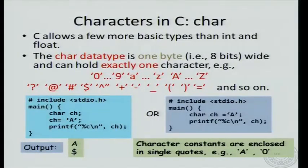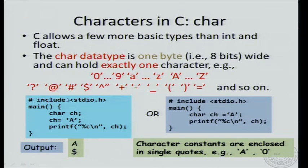In this session we will learn about one more fundamental data type in C. So far we have seen ints and floats — ints represent integers and floats represent real numbers. The third most important data type is character, called char in C. C allows a char to be one byte, that is 8 bits wide, and one byte can hold exactly one character — for example, a digit like 0 through 9, a lowercase letter like a through z, an uppercase letter like A through Z, or other characters like question mark, at, sharp, and so on.